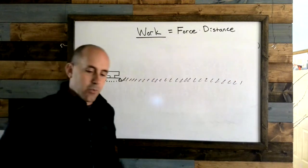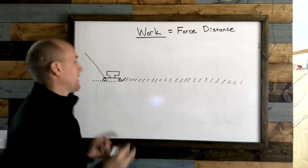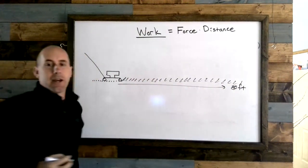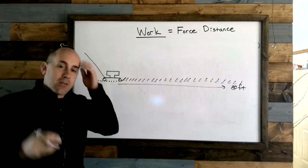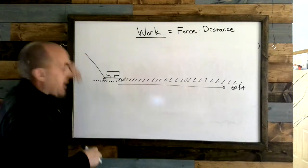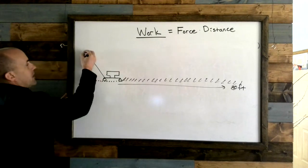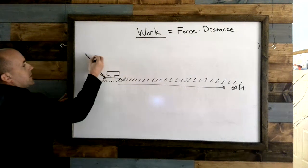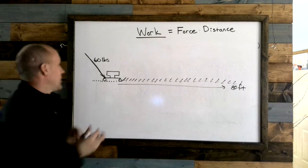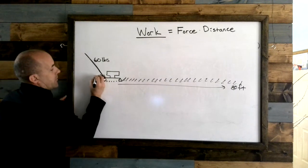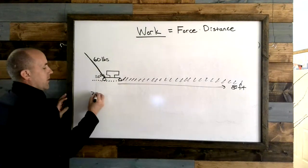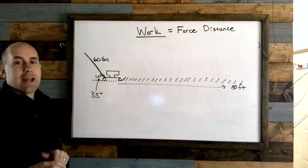What we're going to do is we are going to push that a total of 80 feet just horizontally. As we push, we're putting a certain amount of force on the handle. In fact, the force we represent by this handle right here, we would say that that is 60 pounds of force. And we'd say that the handle forms a 35-degree angle with the ground.